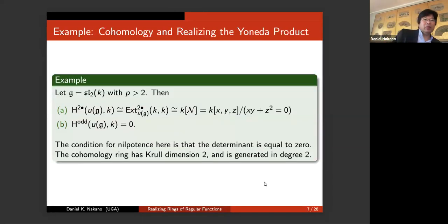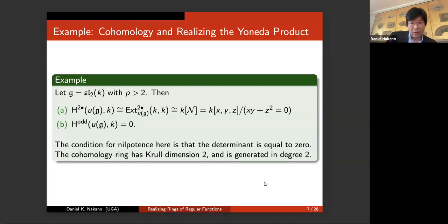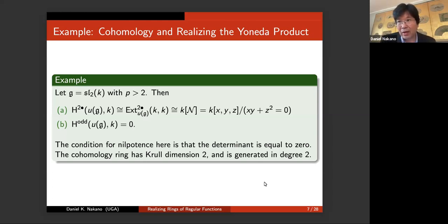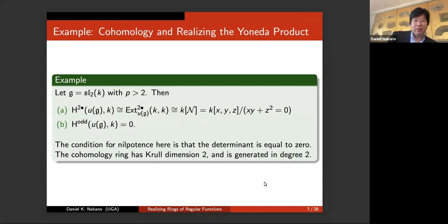As an example, suppose you have 2x2 trace-zero matrices and the prime is bigger than 2. The nilpotency condition is the same as the determinant being equal to zero. So the coordinate algebra of the nilpotent cone is k[x, y, z] with the determinant condition in the quotient. It actually has Krull dimension 2 — the nilpotent cone is an affine algebraic variety of dimension 2. This gives you an actual calculation of the cohomology ring for SL_2.